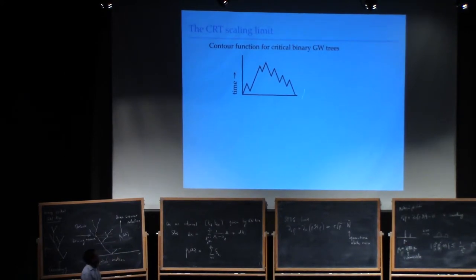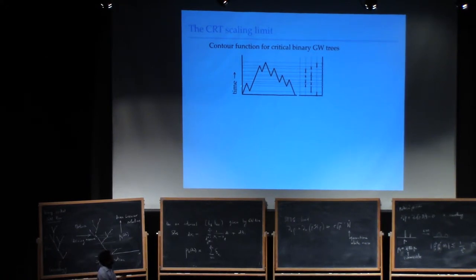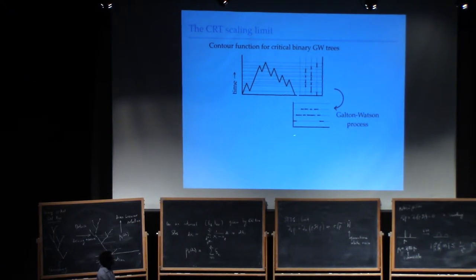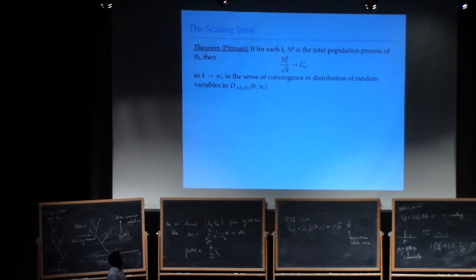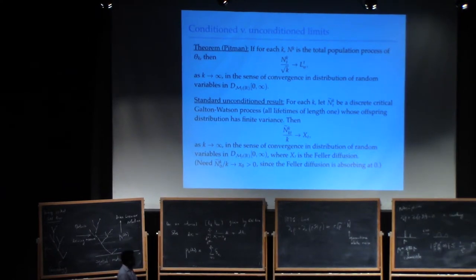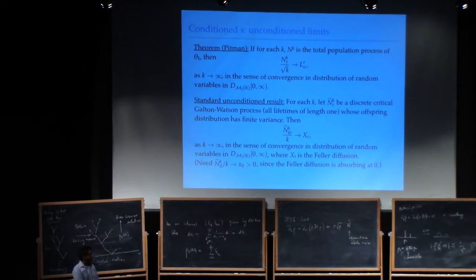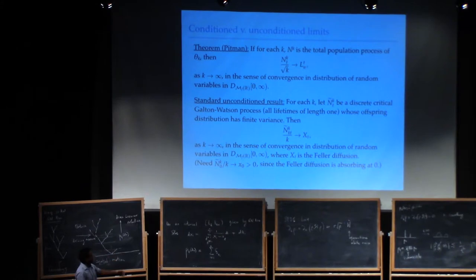Let me give you the picture. I have a Galton-Watson tree — a binary Galton-Watson tree in continuous time. The population process counts the number of individuals at each time. In the limit, the tree converges to something known: the Brownian excursion. And the population process converges to the local time of the normalized Brownian excursion. There's one limit where it's easier to write out the SPDE; there are SPDEs in both cases and tightness in both cases, but in one case the SPDE is particularly clean — that corresponds to the Feller diffusion, the other to the CRT.